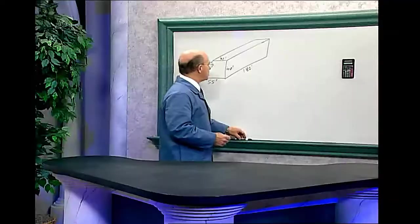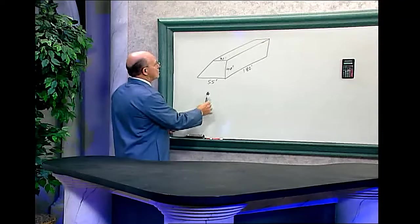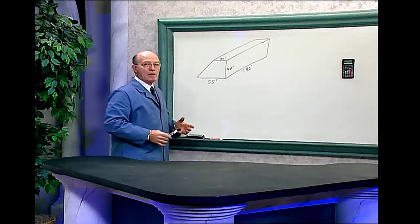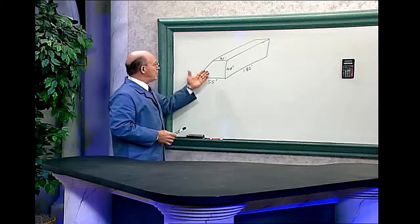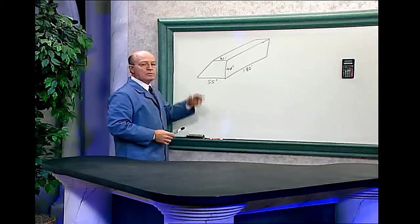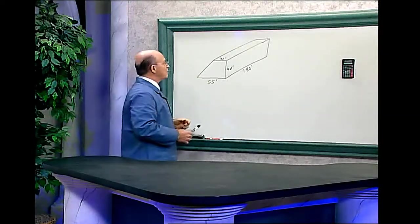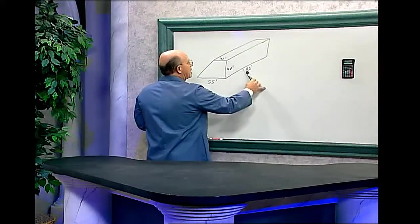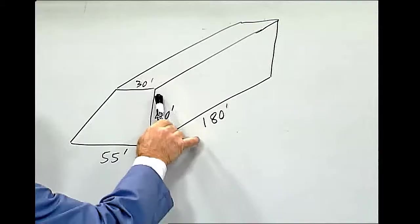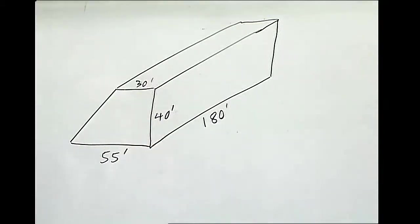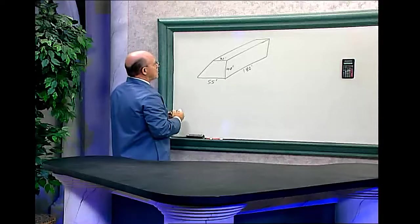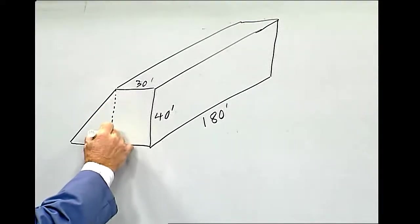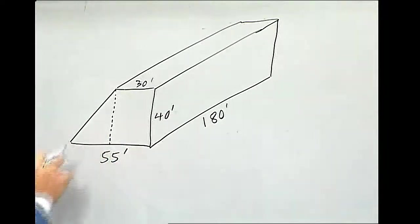Let's do the math. It's an R-shaped building, as you can see on the video. People who do heating and air conditioning have to know the volume of a building like this. The base is 55 feet, the length is 180 feet, 40 feet high, and 30 feet on the top. What we have here is a rectangle and a triangle.